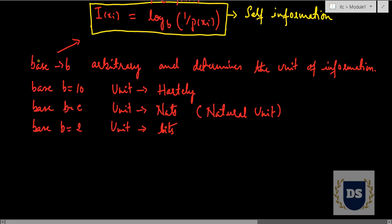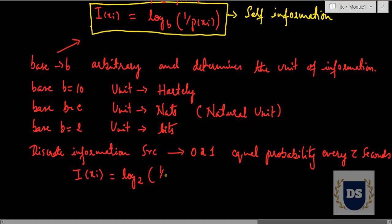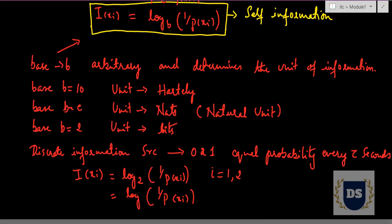Now suppose we have a discrete information source that emits a binary digit — 0 or 1 — with equal probability every 12 seconds. The information content from each output of the source is given as i(x_i) = log base 2 of (1 / p(x_i)), where i can take values 1 and 2. We can rewrite this as simply log(1 / p(x_i)) with base 2 understood.